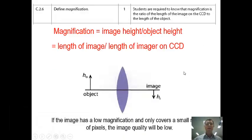Another feature which we want to think about here is magnification. So magnification is equal to the image height divided by the object height. And when we're specifically talking about CCDs, we're talking about the length of the image divided by the length of the image on the CCD. So that gives us the amount of magnification which takes place, how much bigger it looks. So if the image has a low magnification and only covers a small number of pixels, the image quality will be low. So we want as high a magnification as possible, and that maintains a higher quality image.